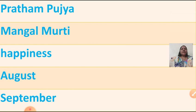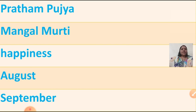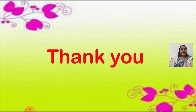Pratham Puja — P-R-A-T-H-A-M-P-U-J-A. Mangal Murti — M-A-N-G-A-L-M-U-R-T-I, Mangal Murti. Happiness — H-A-P-P-I-N-E-S-S, happiness. August — A-U-G-U-S-T, August. September — S-E-P-T-E-M-B-E-R, September. I hope children you all will revise and learn all the new words. Thank you so much children, and see you in the next composition period. Thank you so much for joining us.